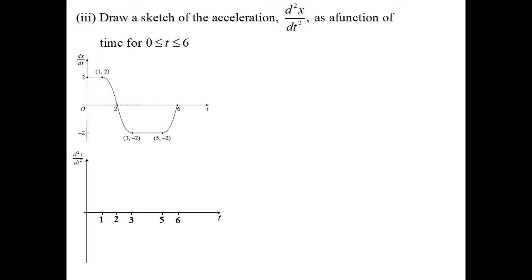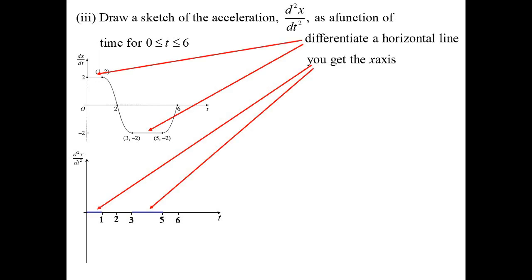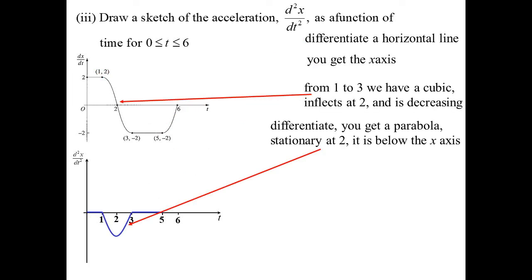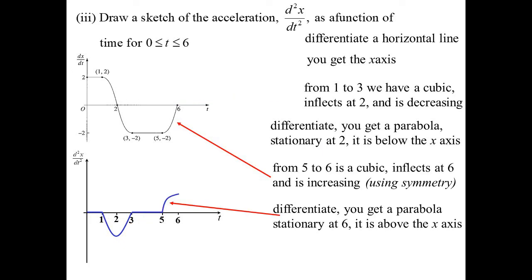Draw a sketch of the acceleration graph. Differentiating a horizontal line gives the axis, so acceleration is zero along those intervals. The curve from 1 to 2 looks like a cubic, so differentiating gives a parabola — drawn in accordingly. From 5 to 6 looks the same shape, so we get half a parabola. That completes the acceleration-time graph.